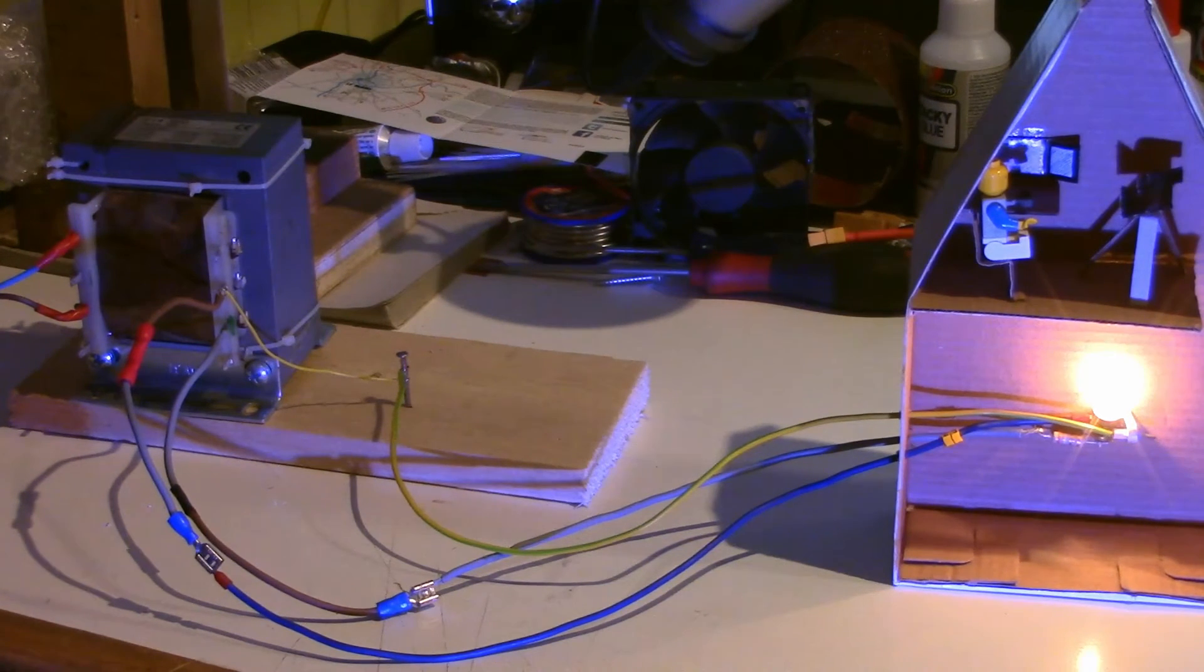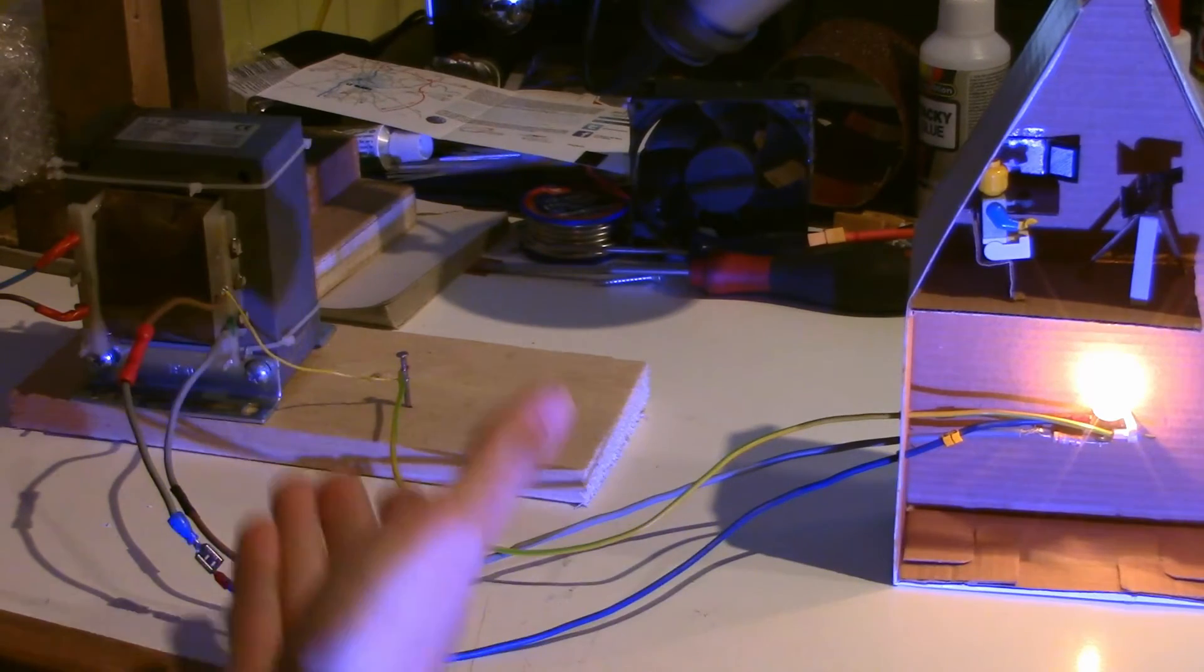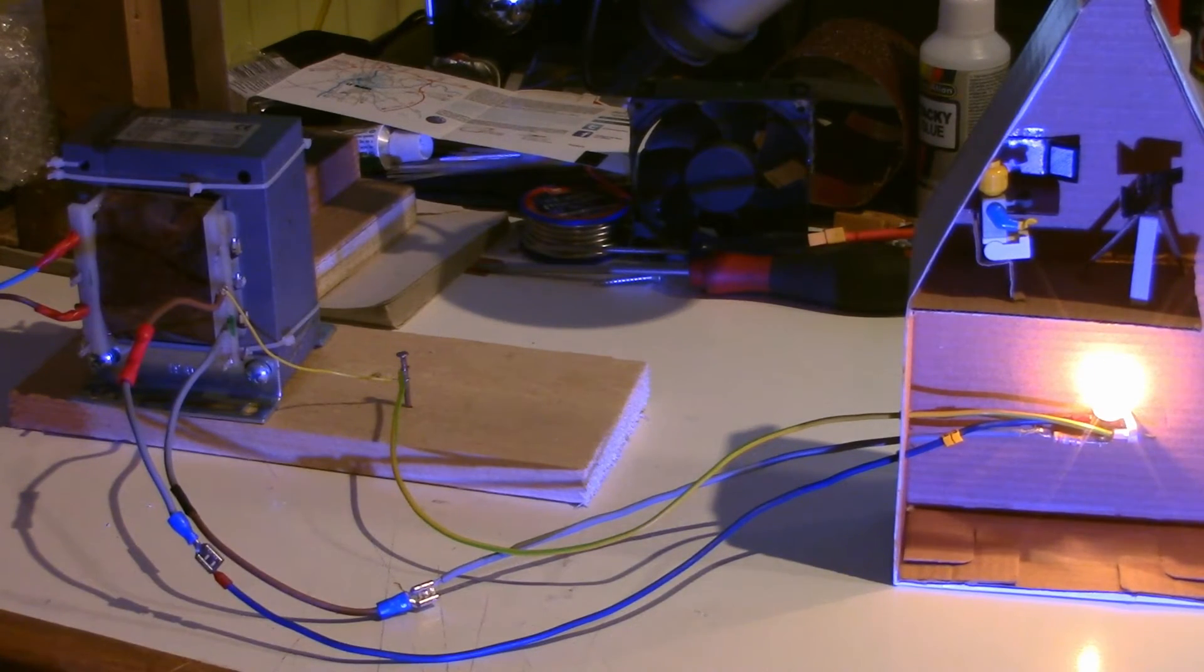So there you go. This is what the live, neutral, and earth wires actually are, and how they are connected, typically, in the power grid.